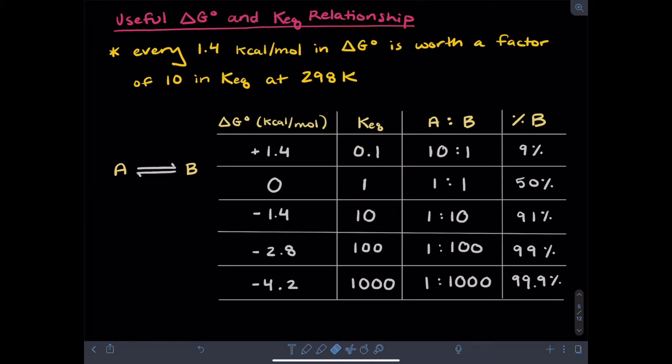Once you get used to thinking of delta G and KEQ in terms of this 1.4 kilocalories per mole relationship, it's going to allow you to really quickly estimate how much of a product is favored just given your delta G value without having to do a full calculation.